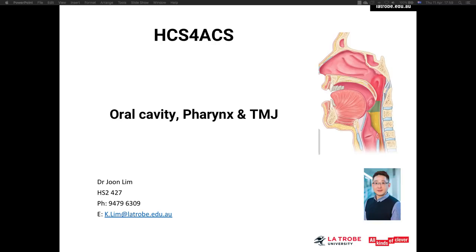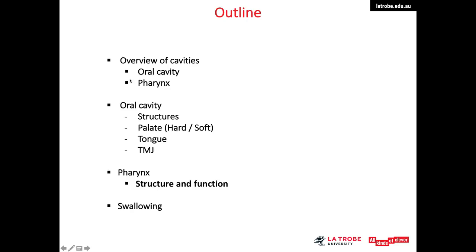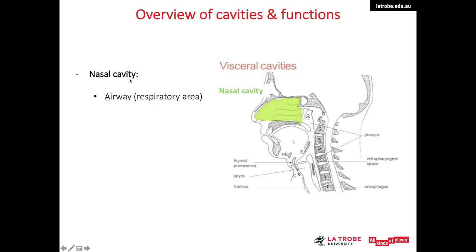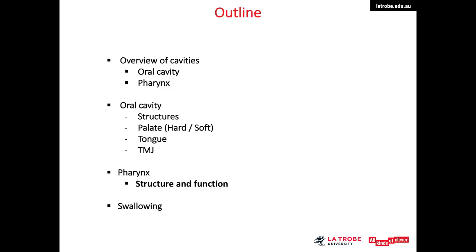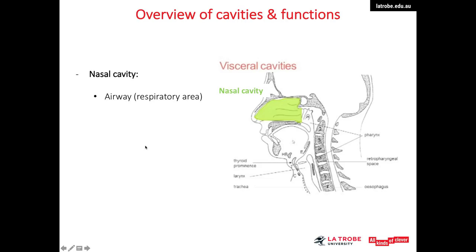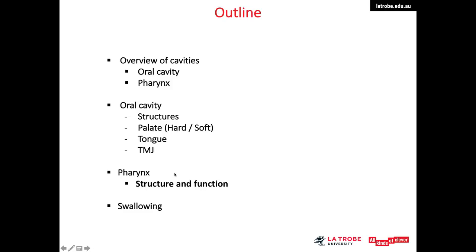Hi everyone. In this lecture, we will cover the oral cavity, pharynx, and the temporomandibular joint. We will quickly go through the main cavities in our head and neck region, then focus on the oral cavity and the pharynx. We will look into the structures of the oral cavities, emphasizing the tongue and the temporomandibular joint, then discuss the pharynx and its structure and function, finishing off with the mechanism of swallowing.